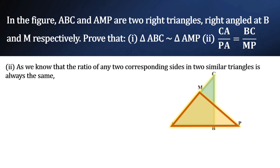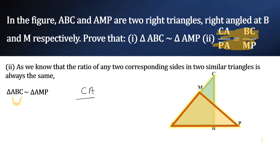Now let us prove the second part: CA by PA is equal to BC by MP. We know that the ratio of any two corresponding sides in similar triangles is always the same. Since we have proved triangle ABC is similar to triangle AMP with vertices in correct order, CA by PA is equal to BC by MP. Hence proved.